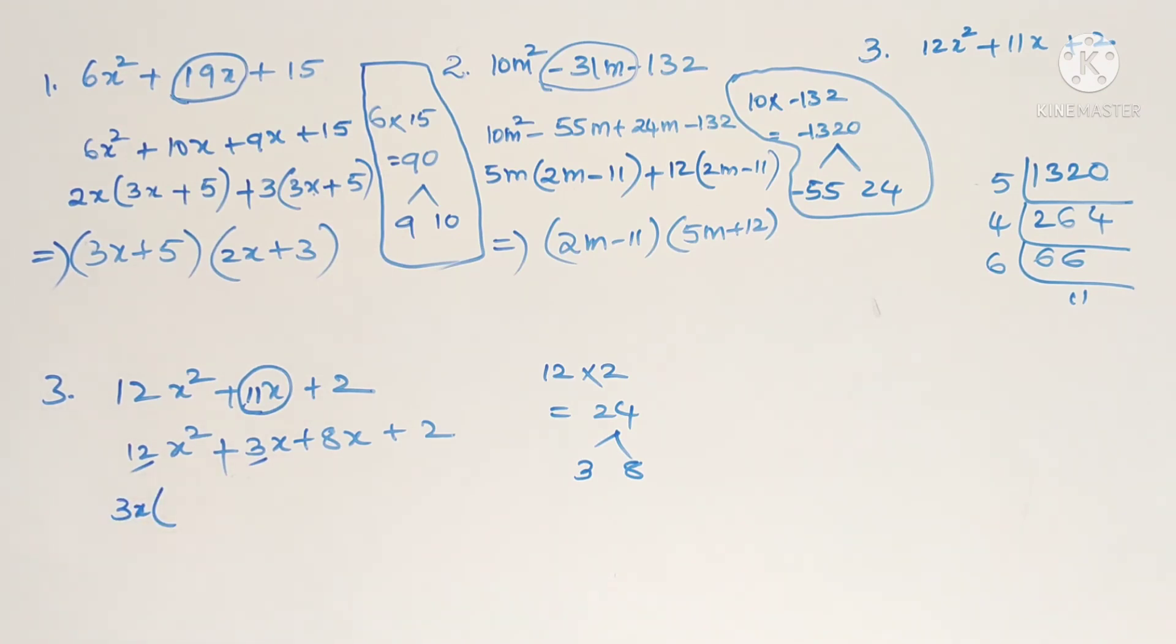3x we take as common. 3 fours are 12, so 4x plus 1. Plus same bracket should come. 2 we take as common, 2 fours are 8 and 2 ones are 2. So finally it is 4x plus 1 into 3x plus 2.